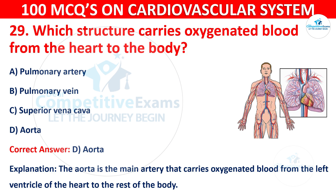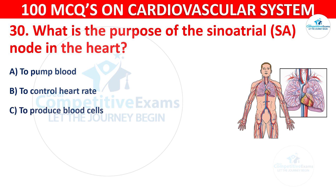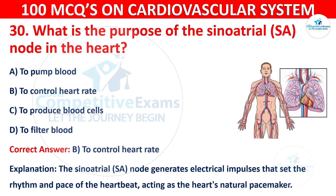Question 30: What is the purpose of the sinoatrial node in the heart? Your options are: To pump blood, To control heart rate, To produce blood cells, or To filter blood. The correct answer is B, To control heart rate. The sinoatrial node generates electrical impulses that set the rhythm and pace of the heartbeat, acting as the heart's natural pacemaker.